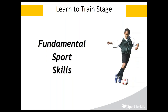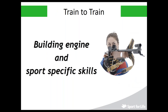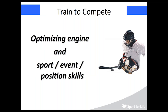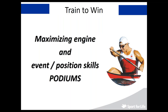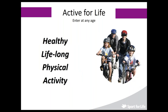Train to train means building the engine and sports-specific skills — this is essentially puberty: 11–15 for girls and 12–16 for boys in the western hemisphere, though in your countries this may be at an earlier age, which must be determined nation-specifically. During puberty the systems are extremely well trainable. During the train-to-compete stage, you optimize the engine and develop sport-, event-, and position-specific skills, aiming for podium performances. Finally, active for life: enter at any age after developing physical literacy and have a healthy life of physical activity participation.